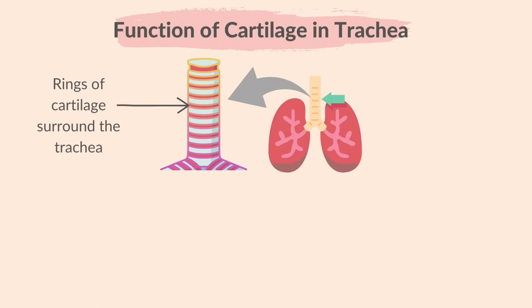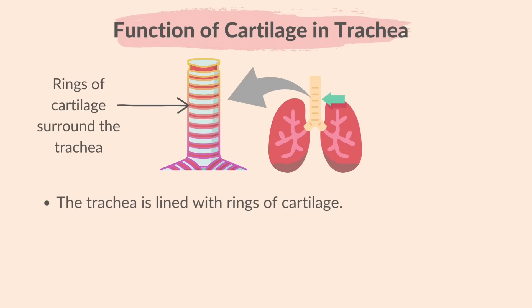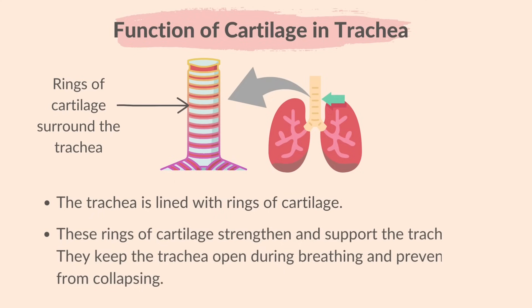What is the function of cartilage in the trachea? The trachea is lined with rings of cartilage. These rings of cartilage strengthen and support the trachea — they keep the trachea open during breathing and prevent it from collapsing.